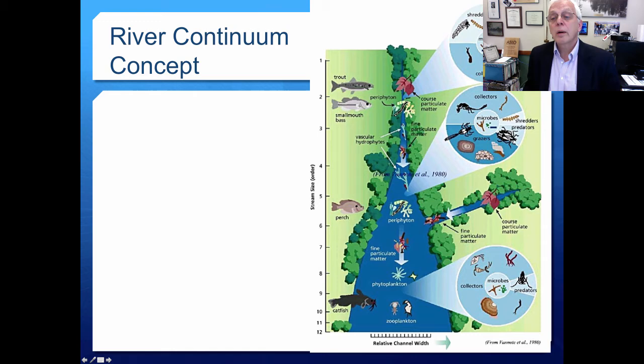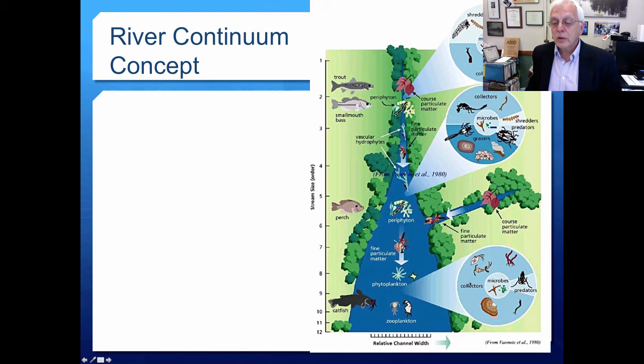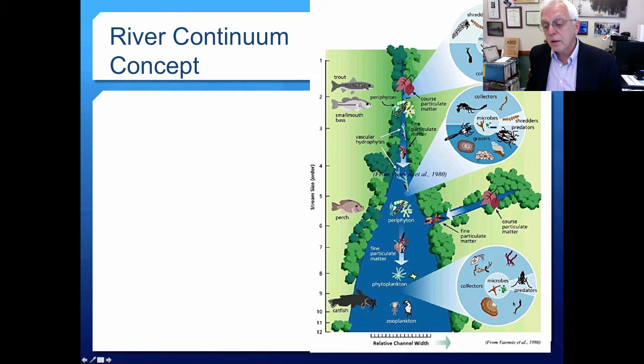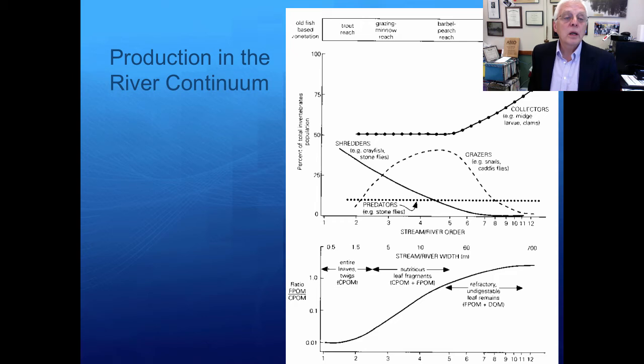Predators are present throughout because wherever there are herbivorous or detritivorous organisms, there are things that eat them, although predators change a little as one moves downstream. In very high-order streams, the system becomes almost lacustrine, and collectors and filter feeders become really abundant — including cladocerans, copepods, sponges, and bivalve molluscs — collecting all the fine particulate matter, including allochthonous and autochthonous material as it moves downstream.